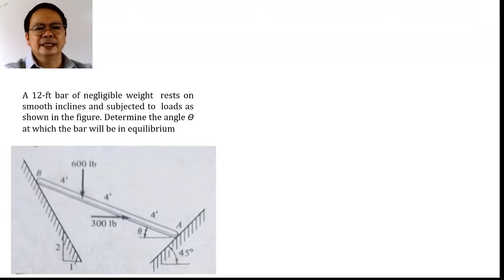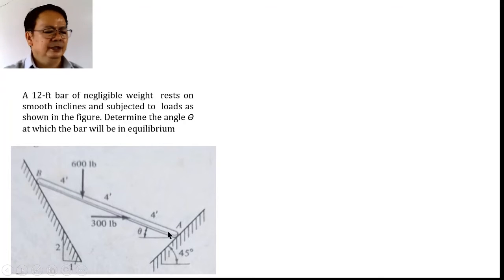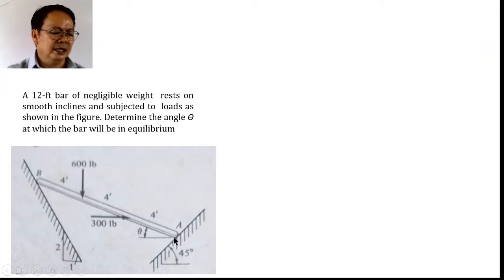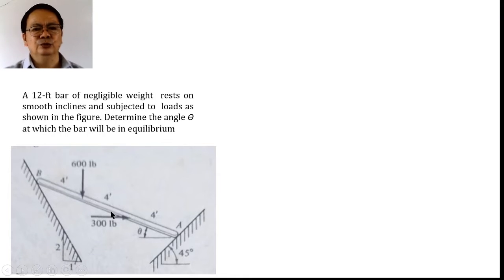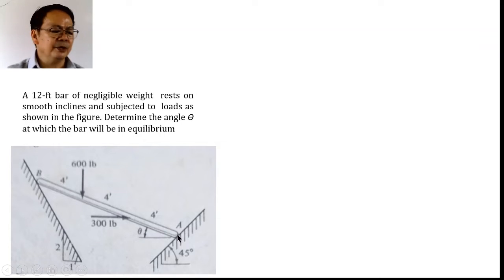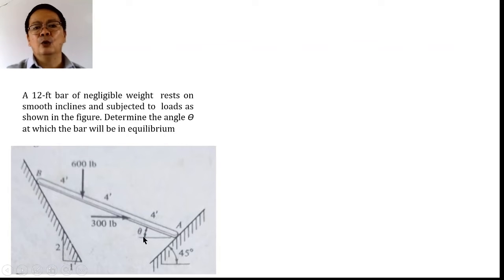Before we solve the problem, let us analyze it first. As indicated, this bar has a total length of 12 feet and rests on an inclined plane considered smooth. On the left, the plane is inclined at two vertical and one horizontal, while the plane on the right is inclined at 45 degrees. The bar is of negligible weight and is subjected to two forces: one vertical force at a point four feet from B measured along the bar, and a horizontal force acting at four feet from A, also measured along the bar. We are required to find the angle theta at which the bar will be in equilibrium.